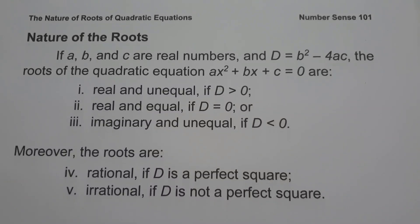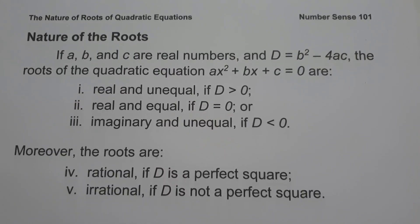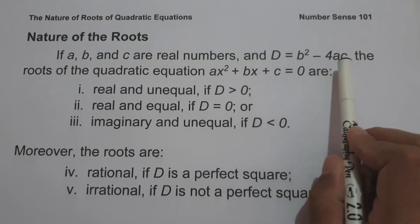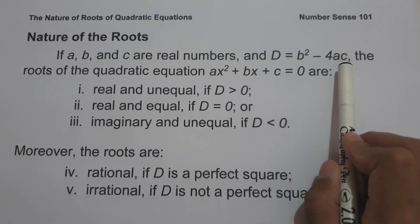For today's video, we are going to talk about the nature of roots of quadratic equations. The first thing that we're going to do to determine the nature of roots of a quadratic equation is to find the value of the discriminant, which is d equals b squared minus 4ac.